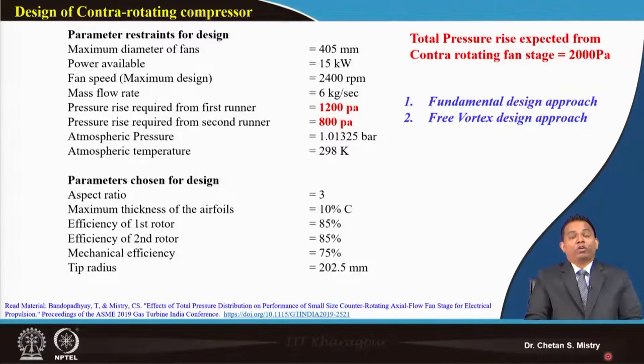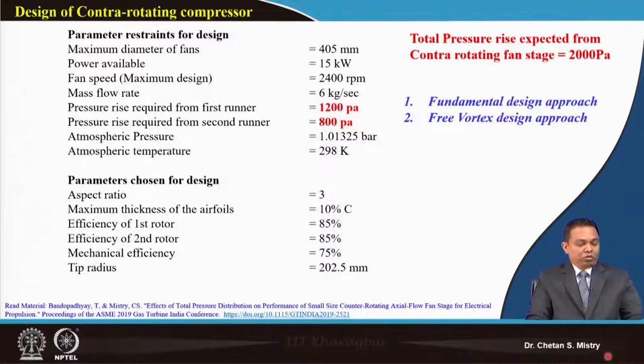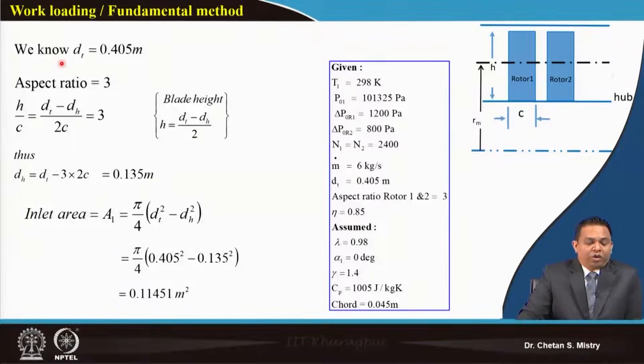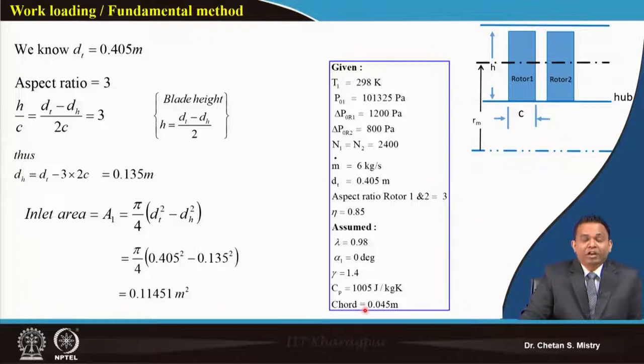If you recall, for the low speed axial flow compressor we assumed C_A/U_tip to be some number. Here that is not the case because we know our mass flow rate directly. Tip diameter is 0.405 m, aspect ratio is 3, and chord for these blades is 45 mm — that is, 0.045 m.